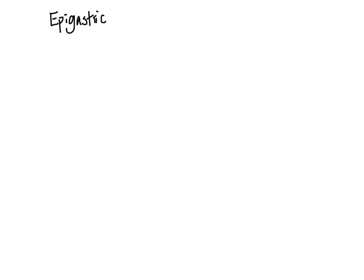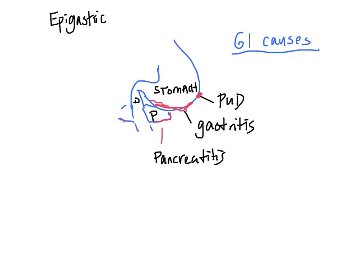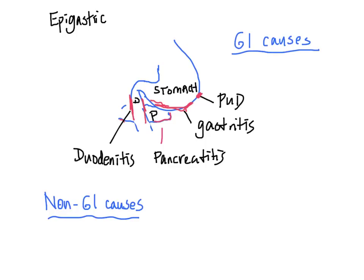Next is the epigastric area. What lives here? The stomach, the duodenum, and the pancreas behind the stomach. GI causes of pain include peptic ulcer disease, gastritis, pancreatitis, and duodenitis. For non-GI causes, the heart sits right above this area. Therefore, any cardiac conditions such as ischemia and MI can produce pain in the epigastric area. Don't be fooled just because the pain is a little lower than expected.